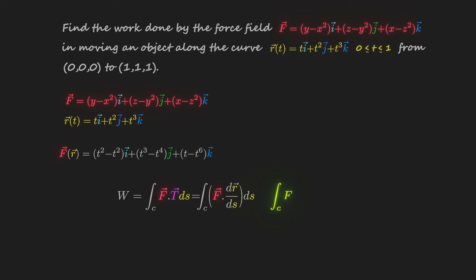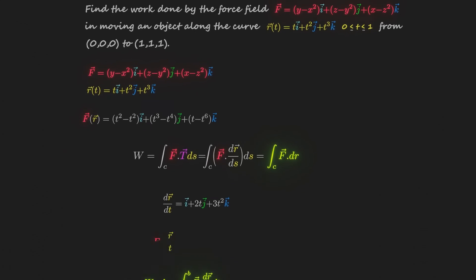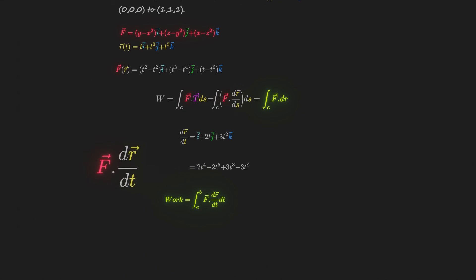Now you can easily calculate total work done by simply using this formula. Just calculate the dot product and integrate from t equals 0 to 1.